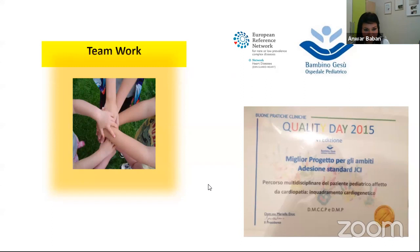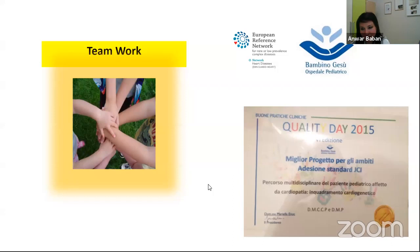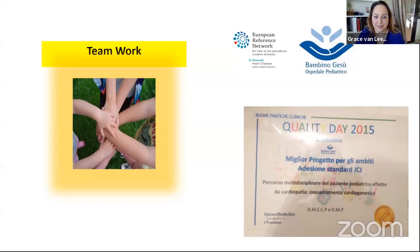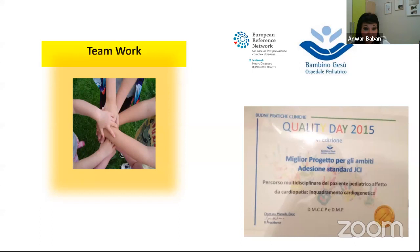Second poll question: A teenager with a history of increased nuchal translucency in prenatal scan has a bicuspid aortic valve, amenorrhea, short stature, and is followed by an endocrinologist. What is the most probable diagnosis? She has a left-sided lesion — bicuspid aortic valve — and doesn't have liver problems, so it's not Alagille syndrome. The answer is Turner syndrome.